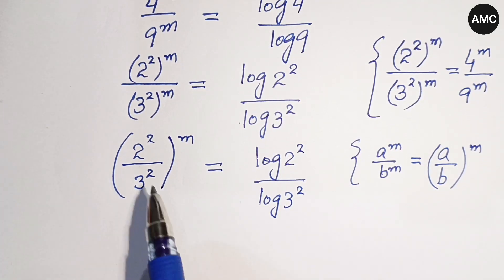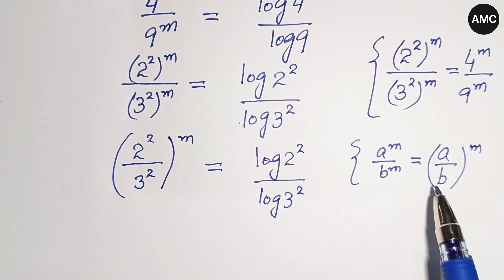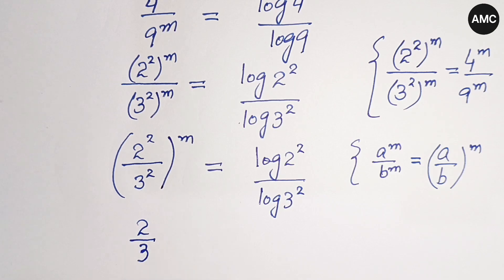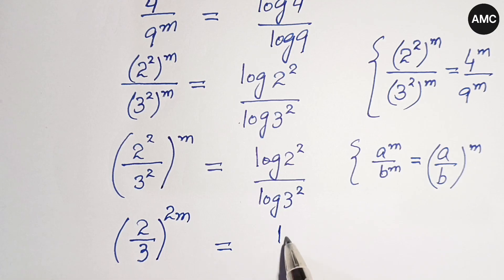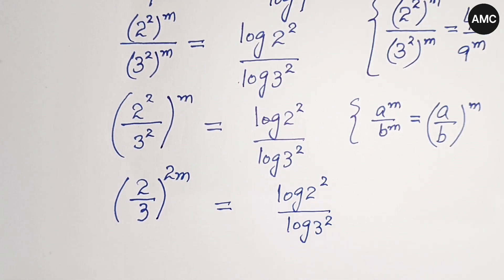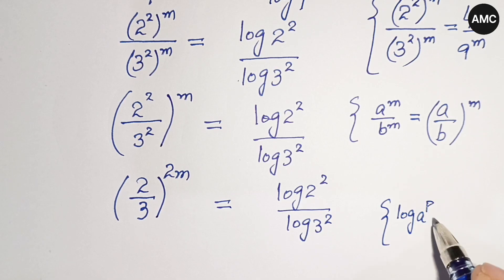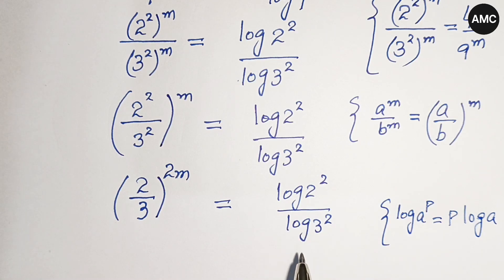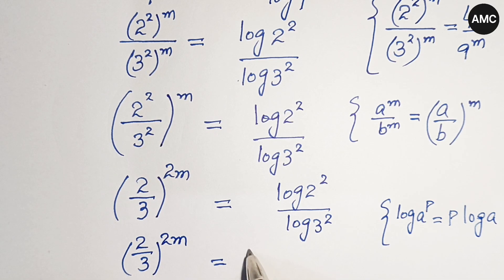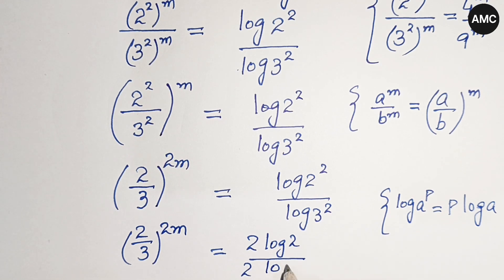Since we have the same exponents, applying the law again gives 2 over 3 whole to the power 2m, equal to log 2 squared over log 3 squared. Using the logarithm law that log a to the power p equals p log a in numerator and denominator, we get 2 over 3 whole to the power 2m is equal to 2 log 2 over 2 log 3. The 2s cancel out.